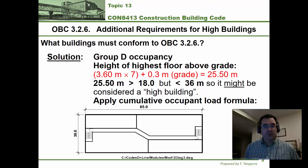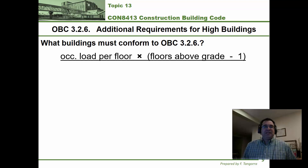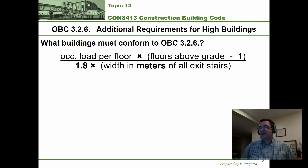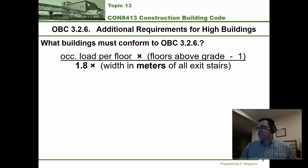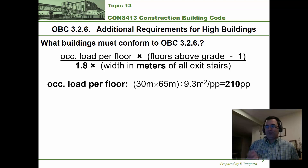That formula is basically a fraction. The numerator is the occupant load per floor multiplied by the total number of floors above grade minus 1. The denominator is 1.8 times the total width in meters of all exit stairs. All those words in the building code translate into this fraction. Let me show you how to apply it step by step.